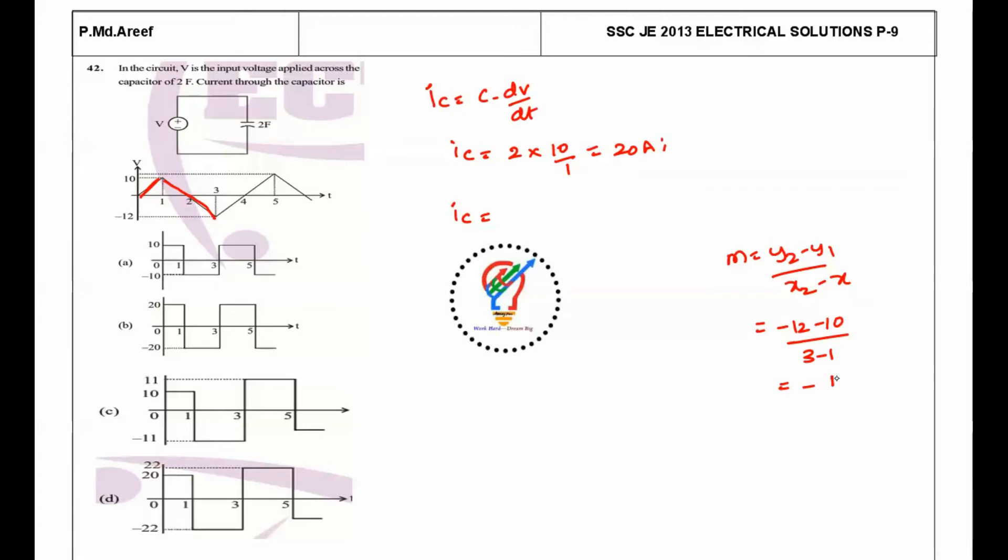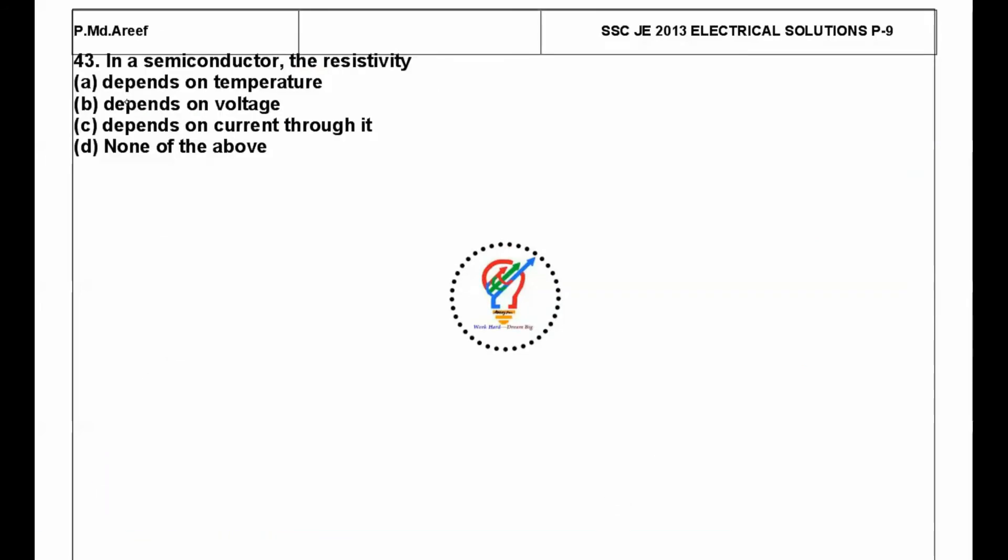So -11 into the capacitance, which is 2, equals -22 amps. From the given options, D is the correct option.